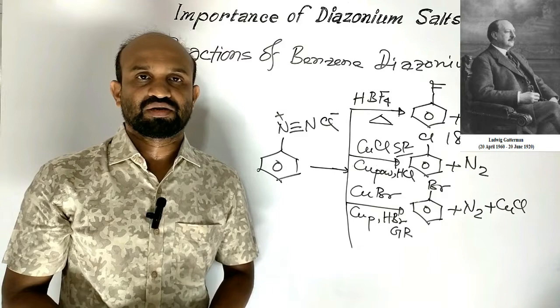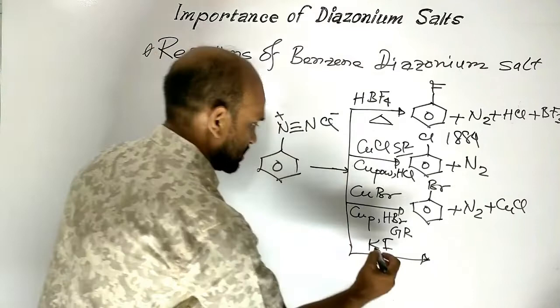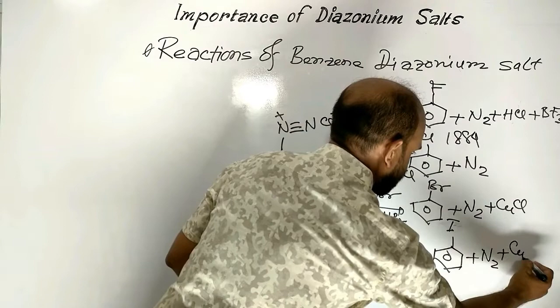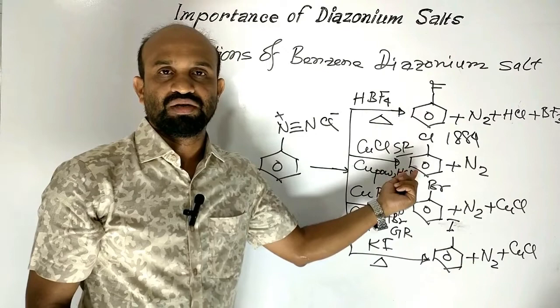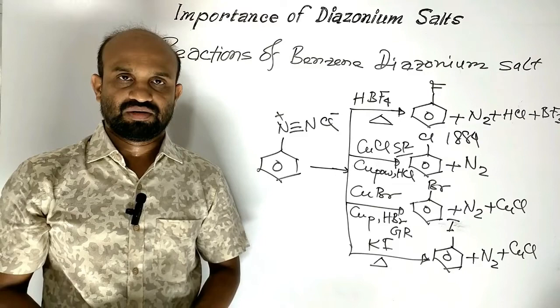The Gattermann reaction is named after German chemist Ludwig Gattermann. When benzene diazonium chloride is treated with potassium iodide (KI) and the reaction is heated, iodobenzene is obtained; byproducts are nitrogen and cuprous chloride. So from benzene diazonium salt we can prepare fluorobenzene, chlorobenzene, bromobenzene, and iodobenzene. The production of chlorobenzene and bromobenzene is known as the Sandmeyer reaction.